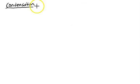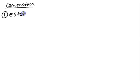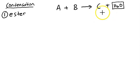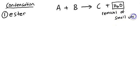Now we are going to discuss about the second type of polymerization, which is condensation. In condensation, when A combines with B to produce C, you need to remove a small number of molecules — for example, water. So condensation requires the removal of a small unit, which can be water or something else. But mostly, in IGCSE and O-levels, it is water.